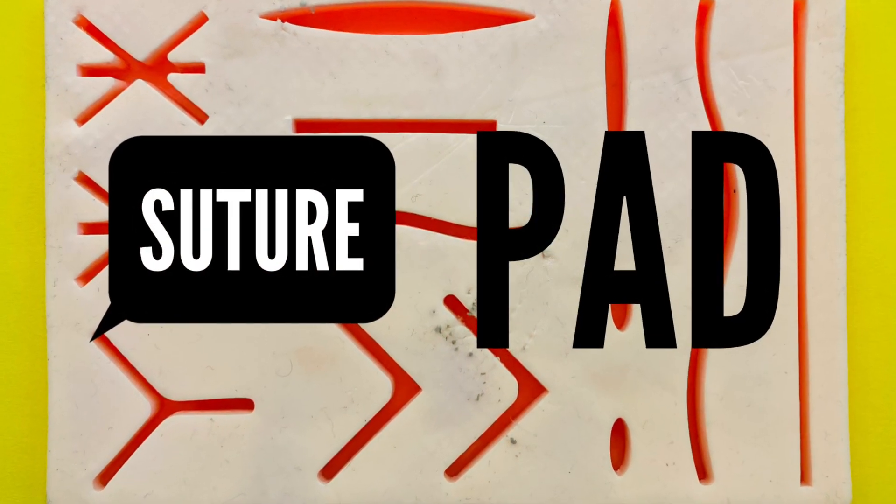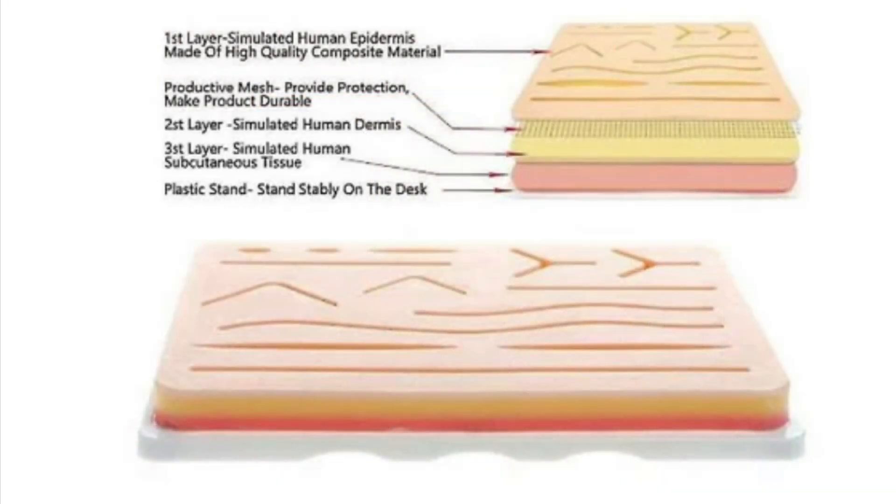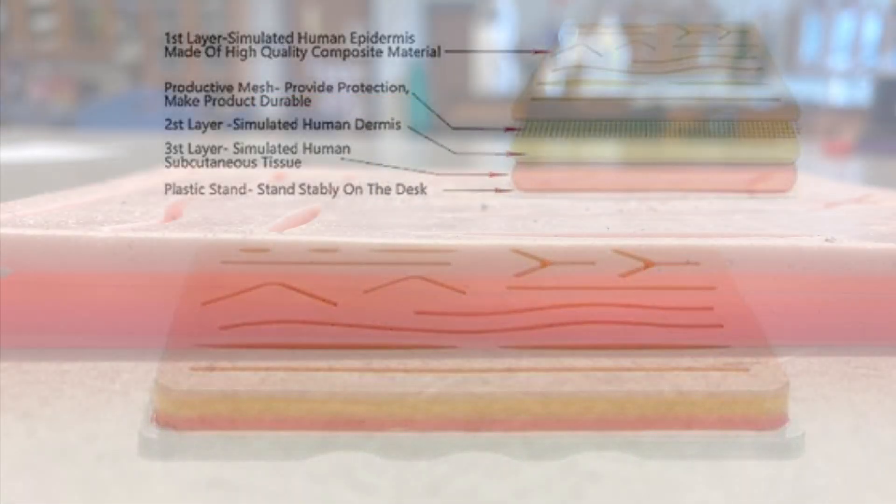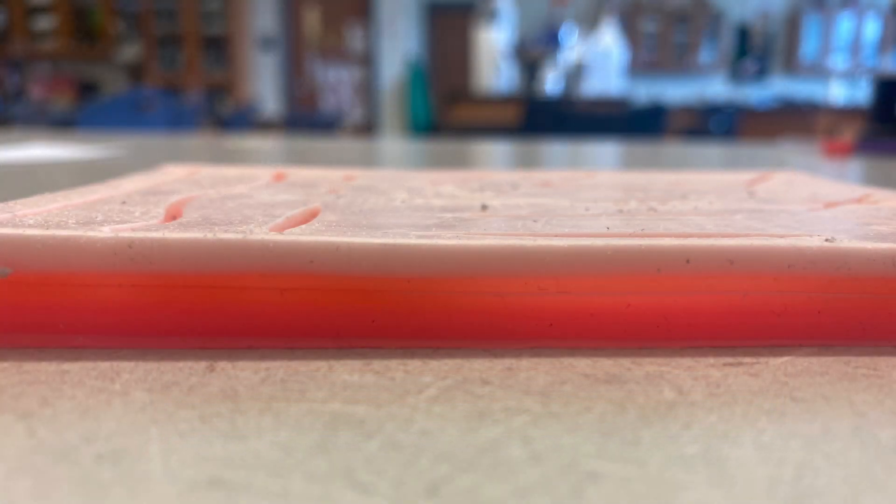The suture pad comes with multiple wound shapes. The suture pad resembles human skin with an epidermis, dermis, and sub-Q. Can you tell which layer is which?